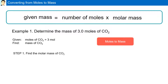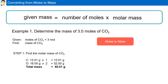The first step is to find the molar mass of CO2. For carbon, there is 1 atom: 12.01 grams multiplied by 1 gives 12.01 grams. For oxygen, there are 2 atoms: the molar mass is 16.00 grams, multiplied by 2 gives 32.00 grams. The total molar mass of carbon dioxide is 40.01 grams per mole.